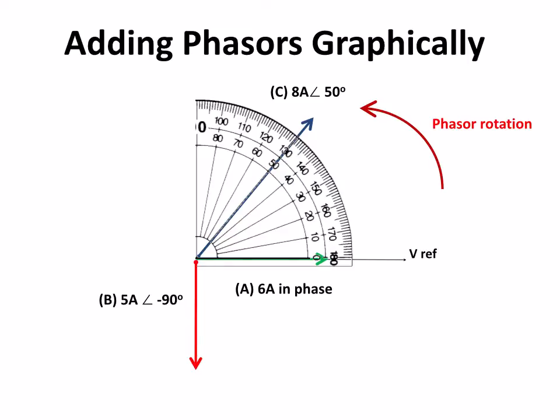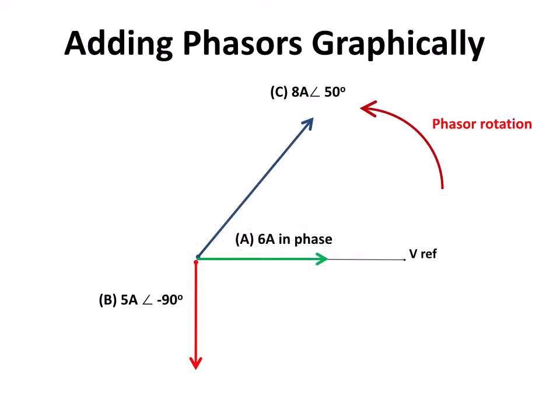And what we need to be able to do is to add these three phasors. First thing we're going to do is to add the first, the green and the red, the in phase and the minus 90. And we're going to do it similar to the vectors. We're going to draw a parallelogram. So we're parallel to the six amp and to the five amp. And then the resultant of this A and B will be the hypotenuse of that triangle that's formed.